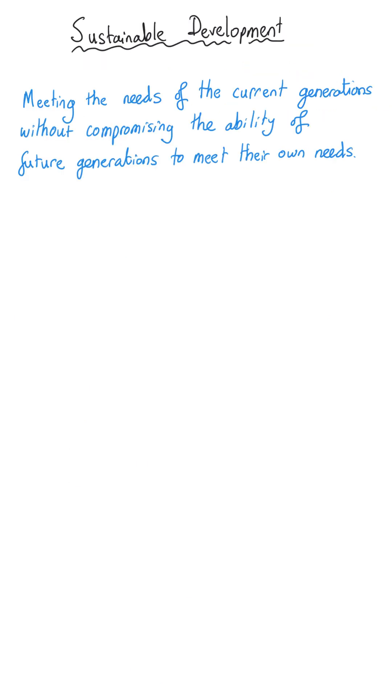Sustainable development is a term that you hear quite a bit in GCSE Chemistry and also if you study geography as well and its use encourages us to think about the impact that our actions have on the planet. If we break the term up into two parts the word sustainable means that we can meet the needs of our current generations without compromising the ability of future generations to meet their needs.